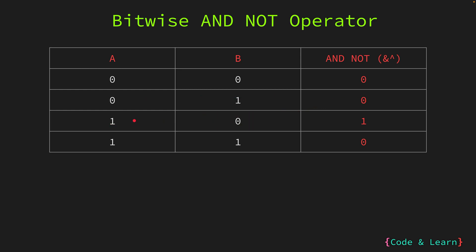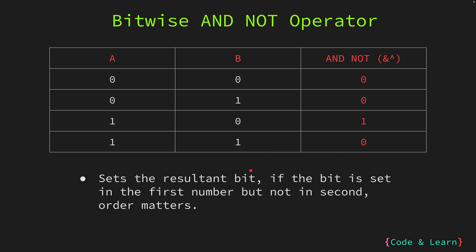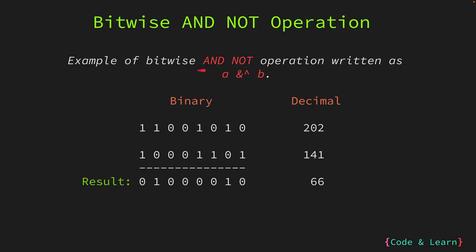For the case of 1 and 0, since the bit is set in the first number but not in the second, the result is 1. For 1 and 1, since the bit is set in both numbers, the result will be 0. To summarize: the AND-NOT operator sets the resultant bit if the bit is set in the first number but not in the second. The order matters — it is also known as a bit clear operation.